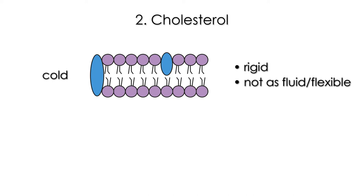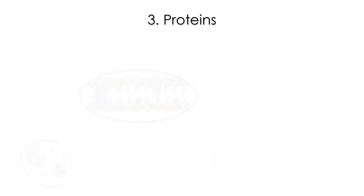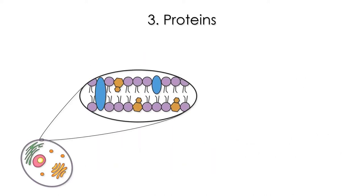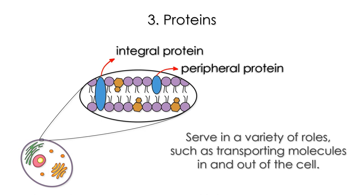And without cholesterol, when it's too hot, the phospholipids will start to separate from each other, leaving larger gaps. Thirdly, we have the proteins. They may be found across the membrane or they can be peripheral, and they serve a variety of roles, such as transporting the right kind of molecules in or out of the cell.